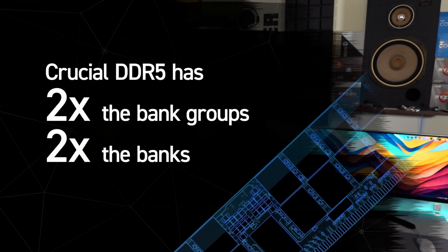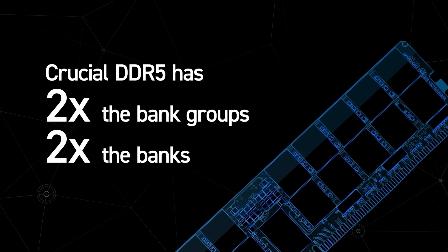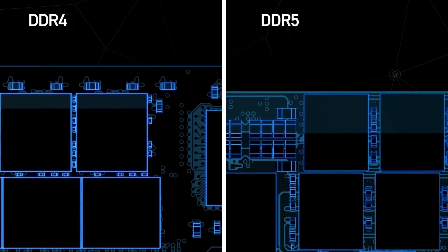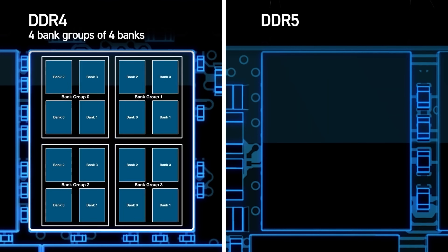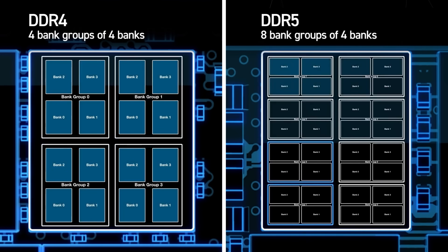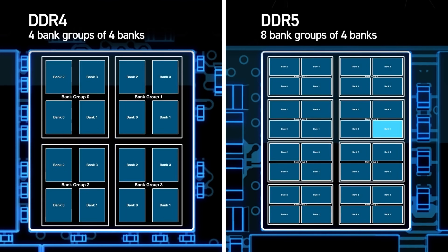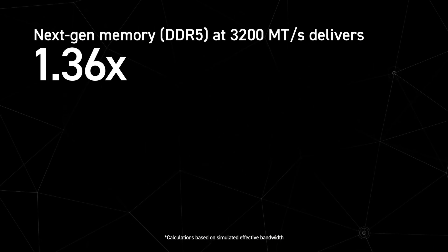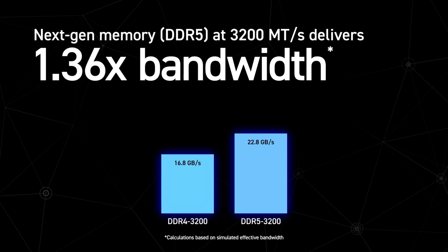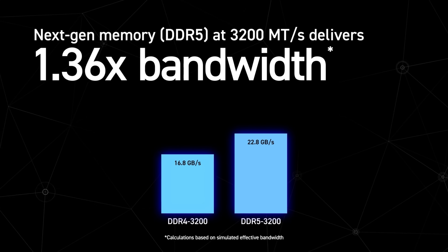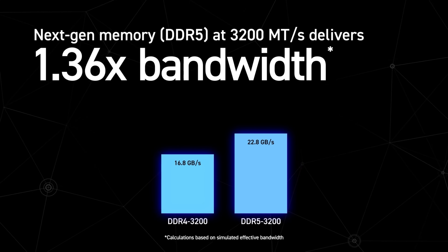This can actually help in some scenarios, as we can use two lanes instead of one without waiting for a memory bank refresh, especially since DDR5 also has double the memory banks. According to Micron, these features can lead to up to 1.36x effective bandwidth at the same frequency, which is quite nice.